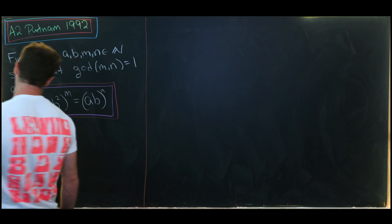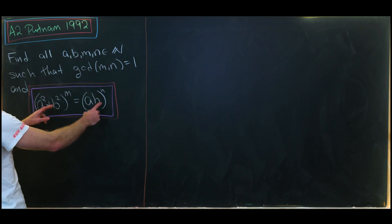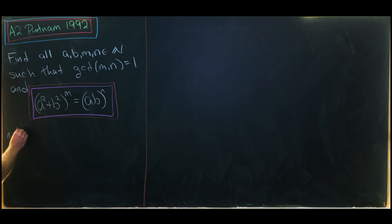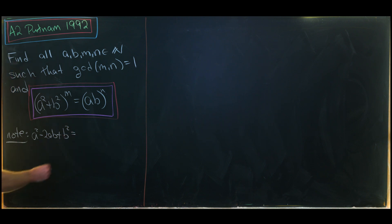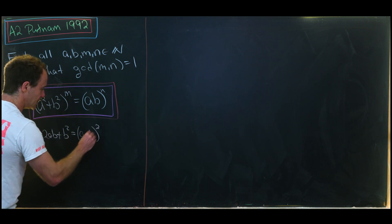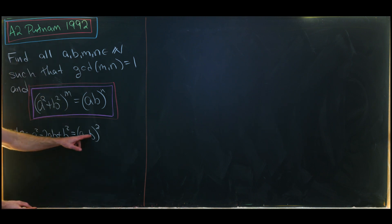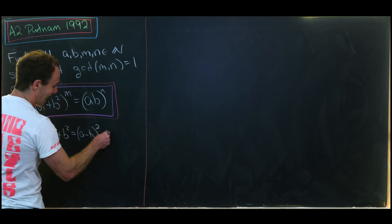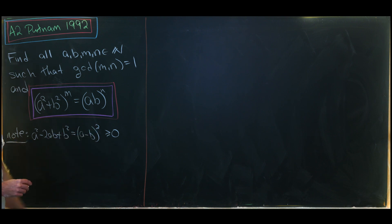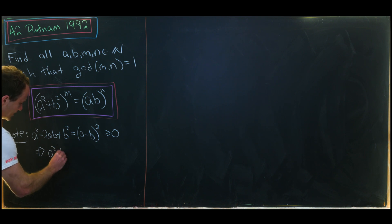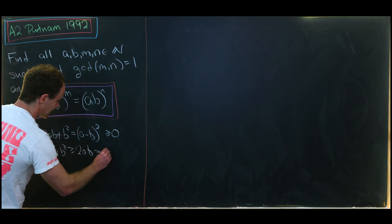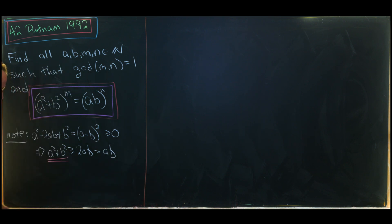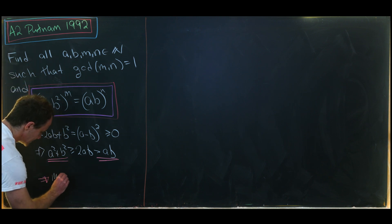The first thing to notice is that we can get some ordering on M and N with the following observation. We notice that A² - 2AB + B² equals (A - B)², just from multiplying out a binomial, and (A - B)² is at least zero. That tells us A² + B² ≥ 2AB, which is strictly bigger than AB. Since those build the bases on each side of the equation, that tells us M is strictly less than N.